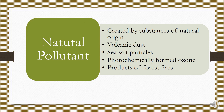Natural pollutants are created by substances of natural origin. These include volcanic dust generated during volcanic eruptions, sea salt particles that travel with fumes or water currents, photochemically formed ozone at ground level through the process of photochemical oxidation, and products of forest fires, which generate carbon monoxide, carbon dioxide, various gaseous pollutants, and thermal pollution.